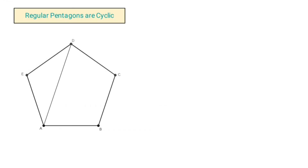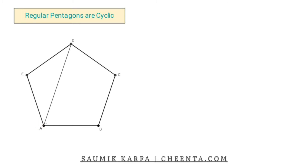We want to find the area of a regular pentagon, and as the first step we want to prove that any regular pentagon is cyclic. What that means is that the vertices of the regular pentagon A, B, C, D, and E all lie on a circle.